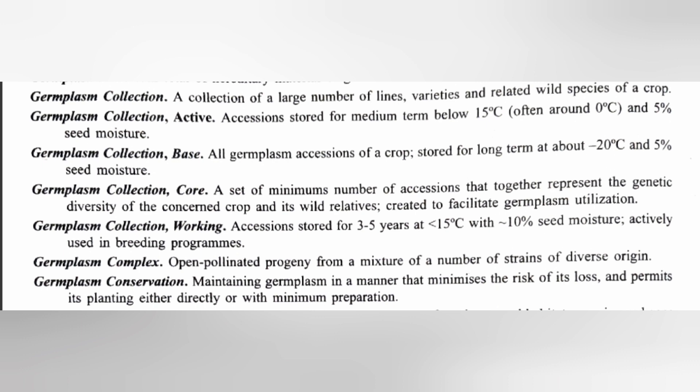Working collection is actively used in plant breeding programs. The germ plasm used in breeding programs is in working condition — that is, ten percent seed moisture and less than 15 degrees Celsius. Under these conditions, it can be stored for three to five years.